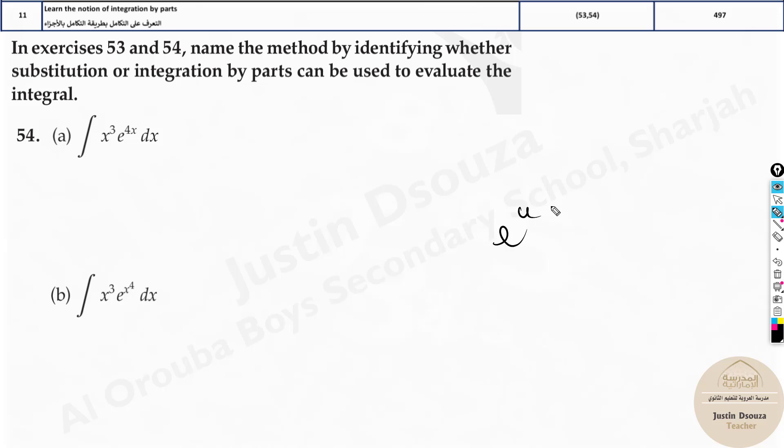What about this? e to the u, that is u equal to x to the power 4. Du by dx will be what? Derive it. 4x cube. Yes, this x cube matches with this. That means it will cancel off. Why? Because du by 4x cube is equal to dx.